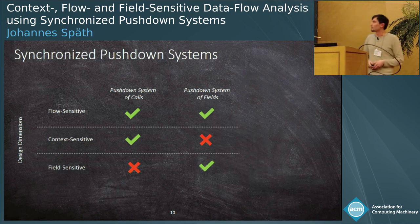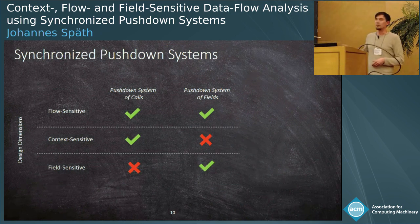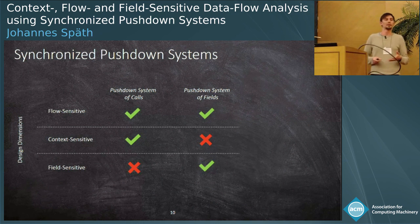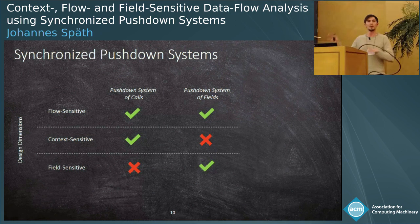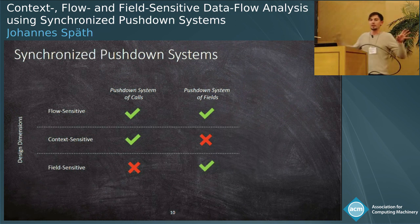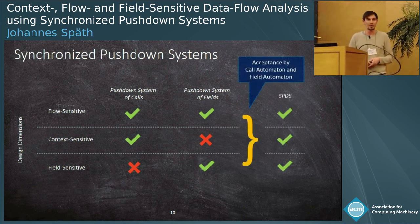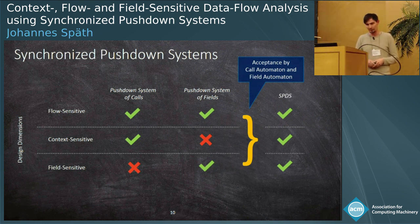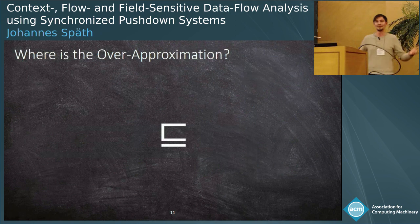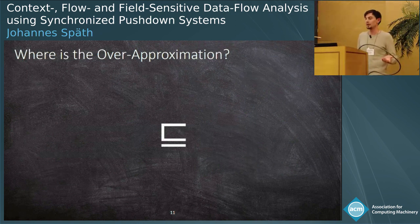To get back to our synchronized pushdown system: you have the pushdown system of calls and the pushdown system of fields. Both of them are actually flow-sensitive — I haven't shown that in the presentation, but the details are in the paper. Only one of them is context-sensitive and the other one is field-sensitive. What we do is we compute the intersection of both automata, and then we have the synchronized pushdown system. Of course, where is the over-approximation? Because otherwise it wouldn't be decidable.